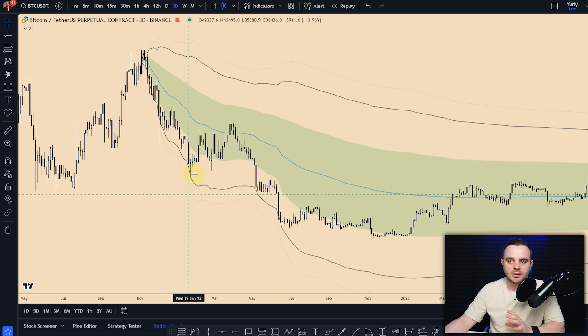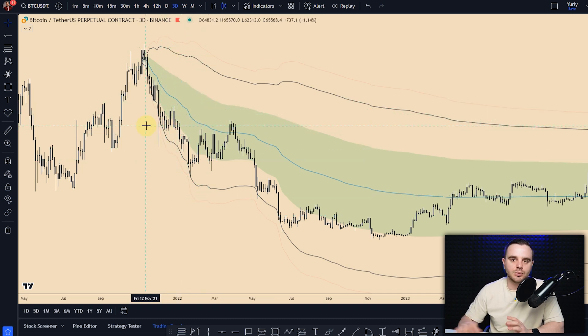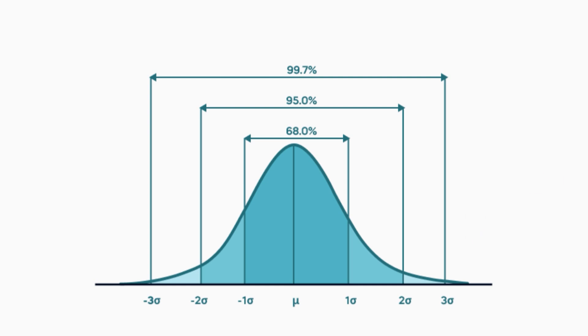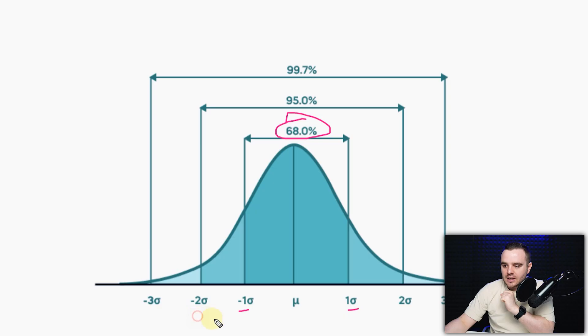Besides VWAP, you can also see on my chart the green stuff and black lines — these are called deviations. Deviation shows you how volume is distributed. From minus one to plus one deviation, 68% of volume is traded. This matters because it will often be an area of accumulation, and you will see how price accumulates and breaks those areas.